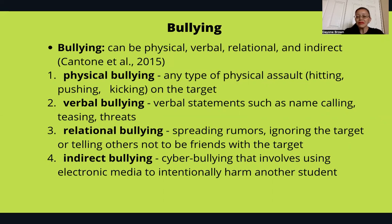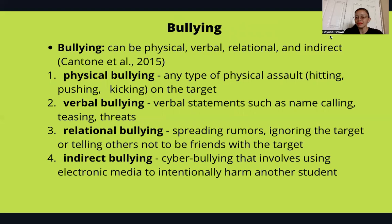Relational bullying includes spreading rumors, ignoring the target, or telling others not to be friends with the victim. Indirect bullying — also known as cyberbullying — involves using electronic media, social media, and the internet to intentionally harm another student. Those are the four aspects of bullying.